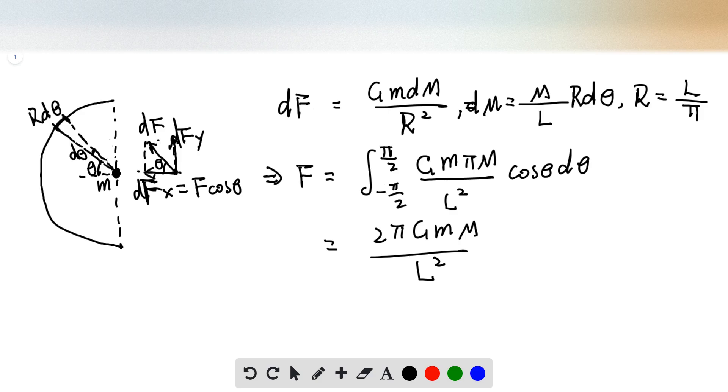And we can express this dm by the density of the rod here, it's the mass divided by the total length times the arc length here, which is R d theta. That's the total df.